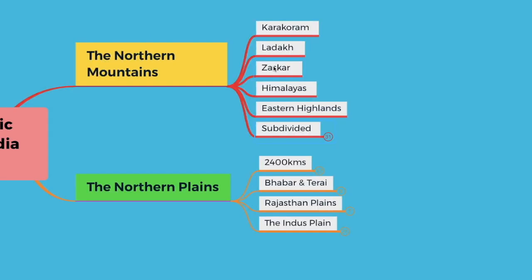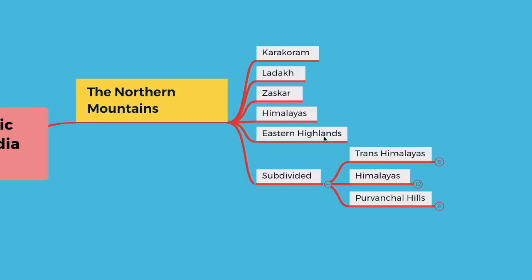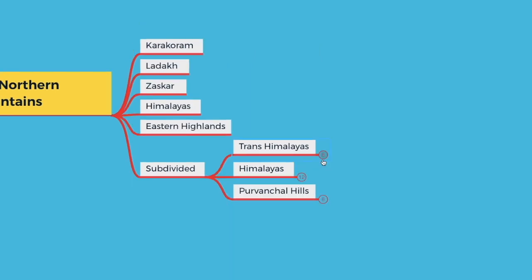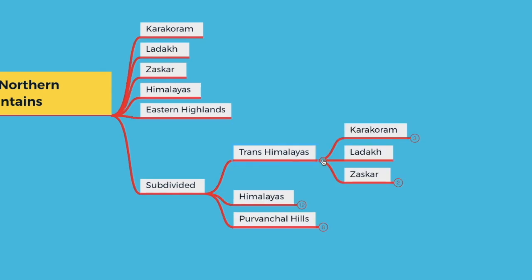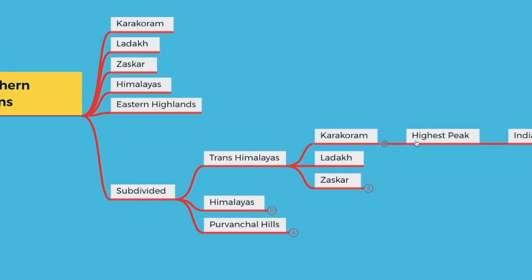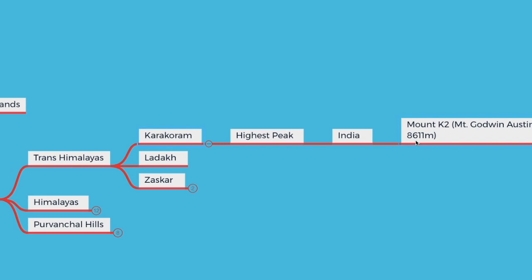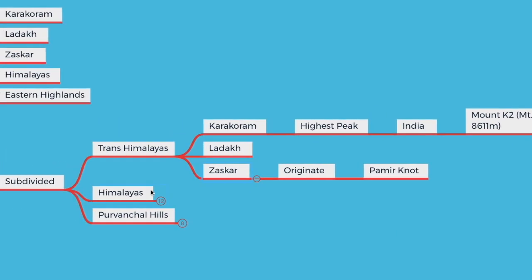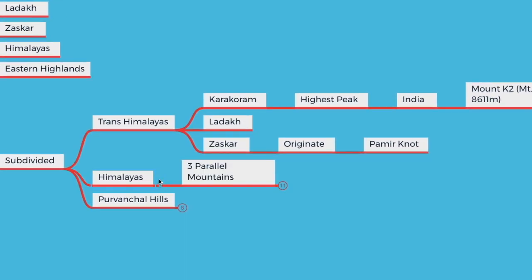These mountain ranges are subdivided into three divisions: Trans-Himalayas, Himalayas, and Provincial Hills. In Trans-Himalayas we have Karakoram, Ladakh, and Zaskar. The highest peak in India, Mount K2, is in the Karakoram range, and the Zaskar ranges originate from Pamir.